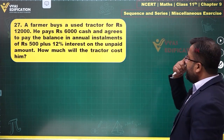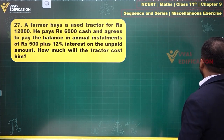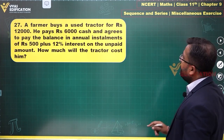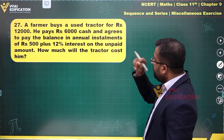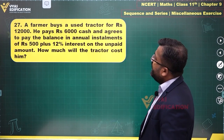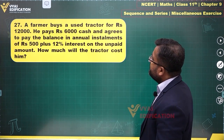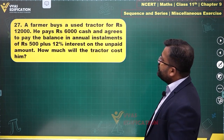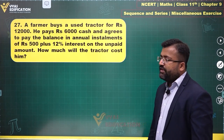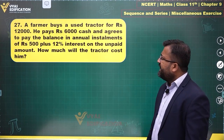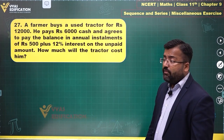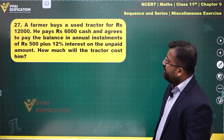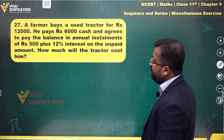Question number 27: A farmer buys a used tractor for rupees 12,000. He pays 6,000 rupees cash and agrees to pay the balance in annual installments of rupees 500 plus 12 percent interest on the unpaid amount. How much will the tractor cost him?